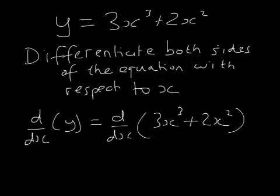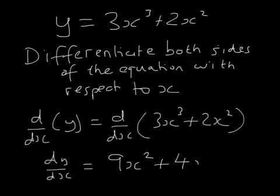So that's d by dx of y equals d by dx of 3x cubed plus 2x squared. Well, d by dx of y, that's just dy by dx. And d by dx, consider it d by dx of 3x cubed, 3 times 3 is 9, that's 9x squared and 4x plus 4x.